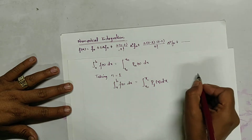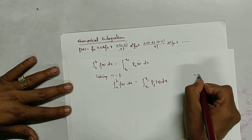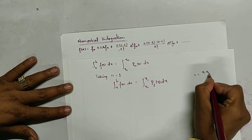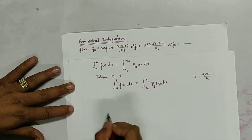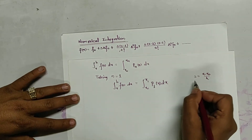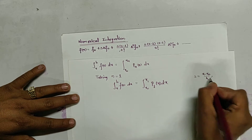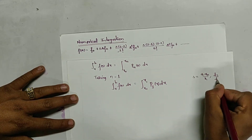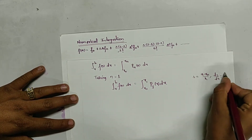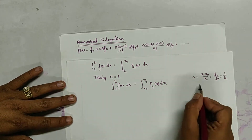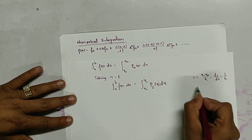We know that s equals (x − x0) / h. It follows that ds/dx equals 1/h.